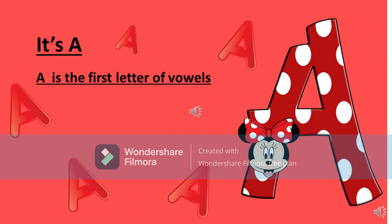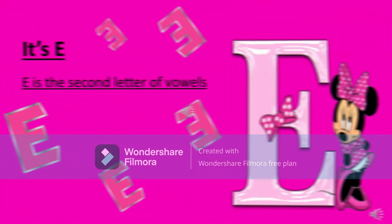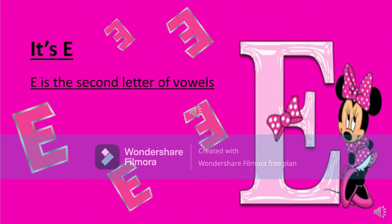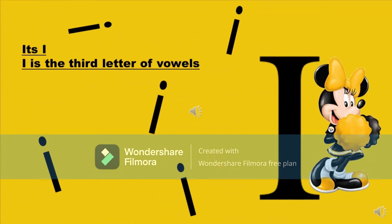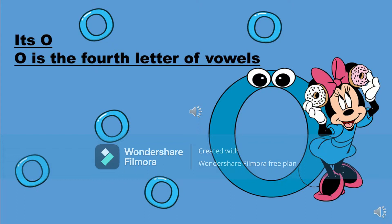It's A. A is the first letter of vowels. It's E. E is the second letter of vowels. It's I. I is the third letter of vowels.